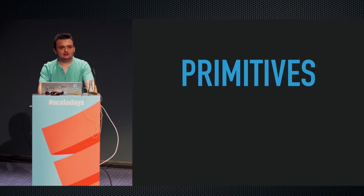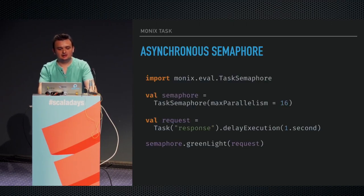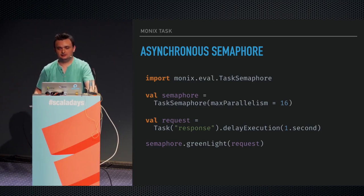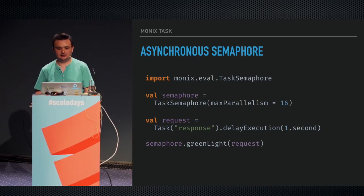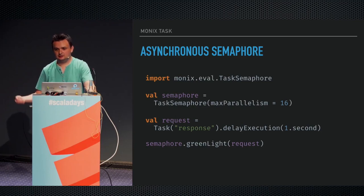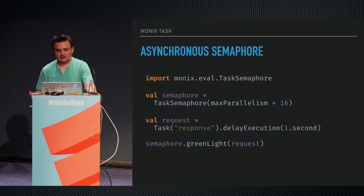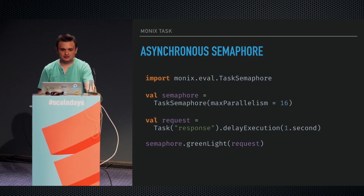Some primitives provided for concurrency handling in Monix's eval sub-project: we have an asynchronous semaphore implementation based on task that will limit the parallelism of your tasks. This is like a semaphore limiting parallel execution to 16 in this example, meaning incoming tasks wait for currently active ones to finish if there are more than 16. Usage is easy — you have a task and you green-light it through the semaphore. This is useful for limiting parallel requests to an API that has rate limits. For complicated scenarios it's better to work with streaming and back pressure; task semaphore is for simple cases.